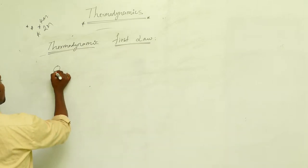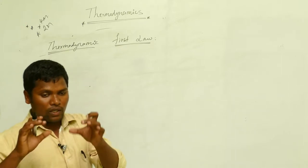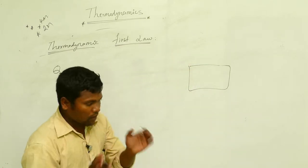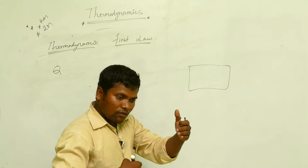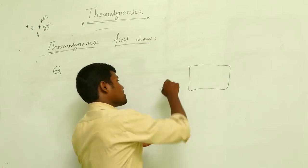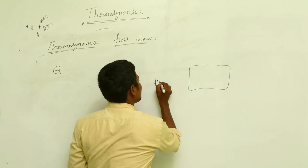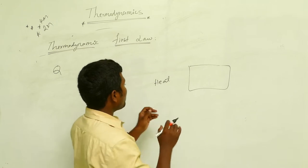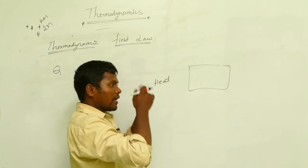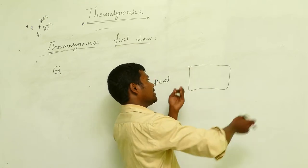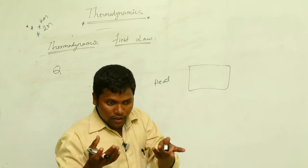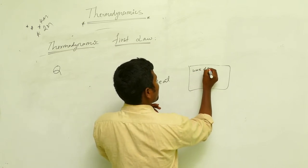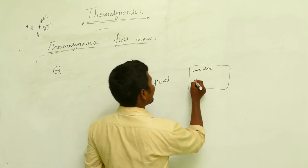Heat — which letter we can consider? Q. So if you give some energy to one system, we are giving some energy to this system. In which form are you giving energy to this system? In the form of heat. What happened? You are applying some heat to one system. How much energy you are giving to that system? The energy is utilized by this system. The energy in different parts may be there. Some energy is used in work done.